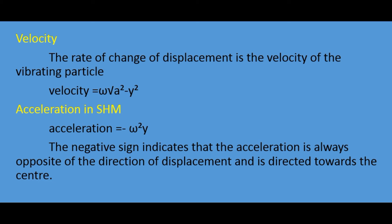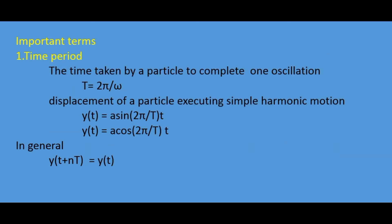Next we see some important terms related to Simple Harmonic Motion. The first one is time period. Time period means the time taken by the particle to complete one oscillation. We write capital T equals 2 pi divided by omega.